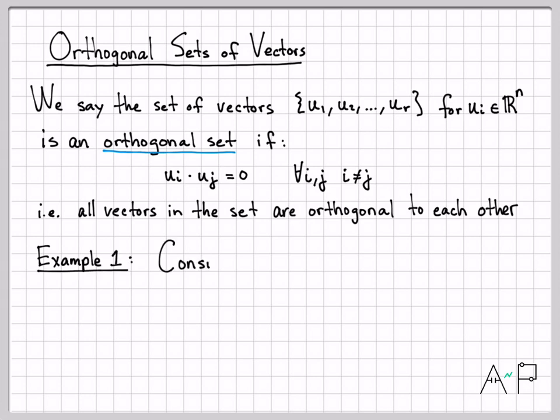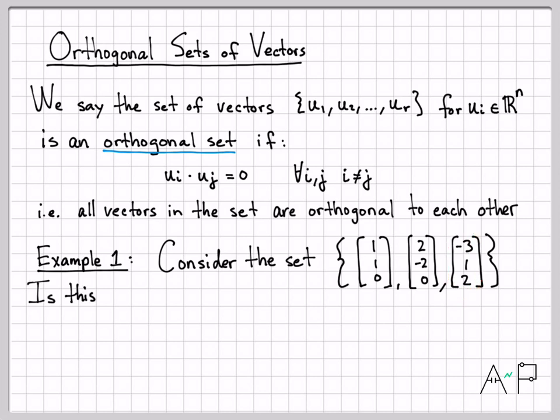Let's do a little example. Let's take a look at this set of vectors: [1, 1, 0], [2, -2, 0], and [-3, 1, 2]. So that's the set of vectors we'll work with. And the question, not surprisingly, is: is this an orthogonal set of vectors?